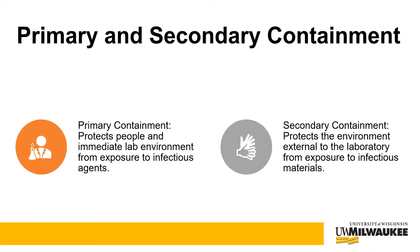Examples of secondary barriers include work areas that are separate from public areas, decontamination facilities, hand washing areas, special ventilation systems, and air locks.